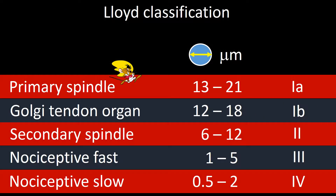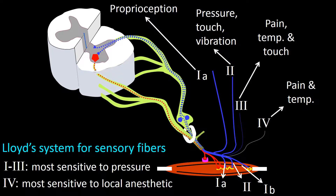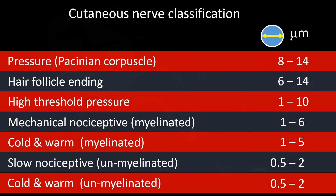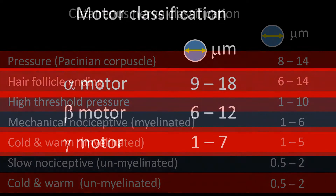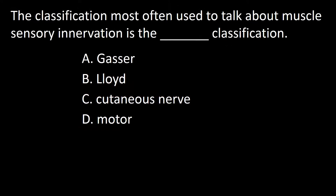The Lloyd classification is most often used for muscle sensory fibers but can also be used for all sensory modalities. The cutaneous nerve classification is based on a mixture of factors such as receptor organs, mechanical characteristics, presence or absence of myelination, and function. The motor classification is restricted to muscle motor fibers. So the answer to this question is B.